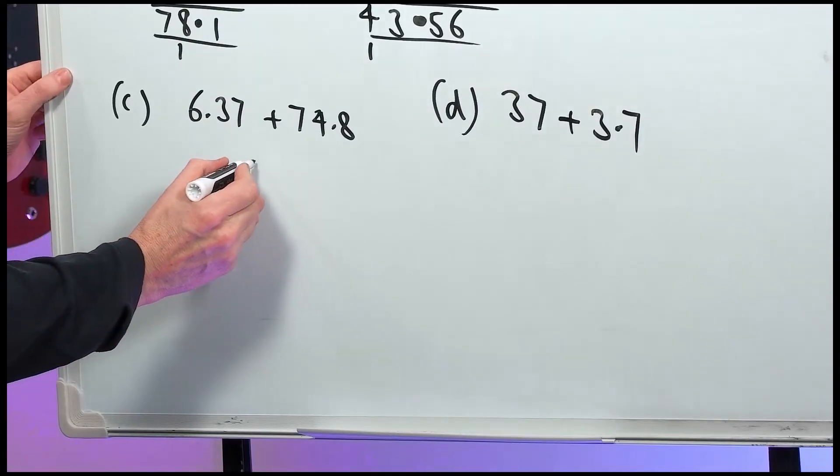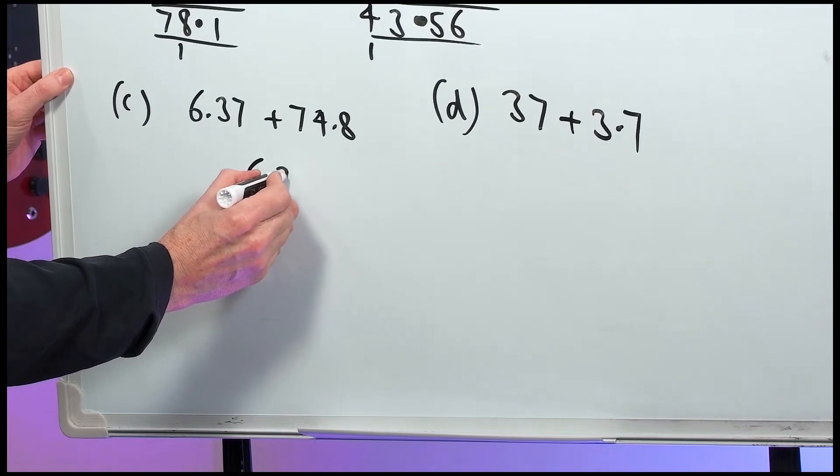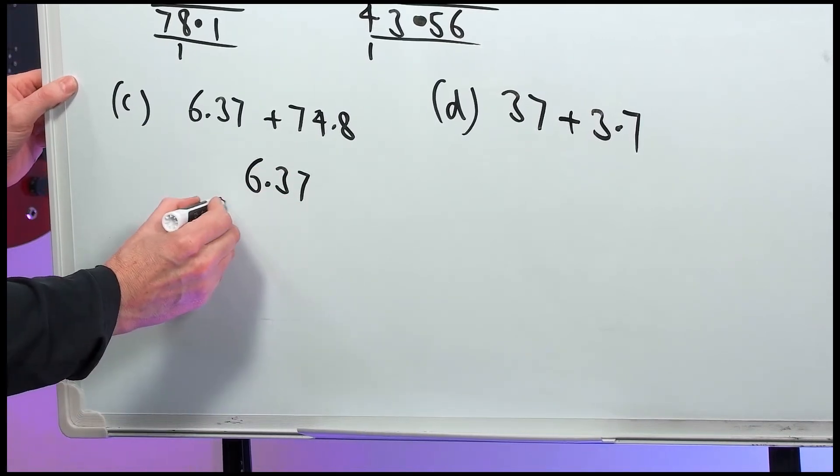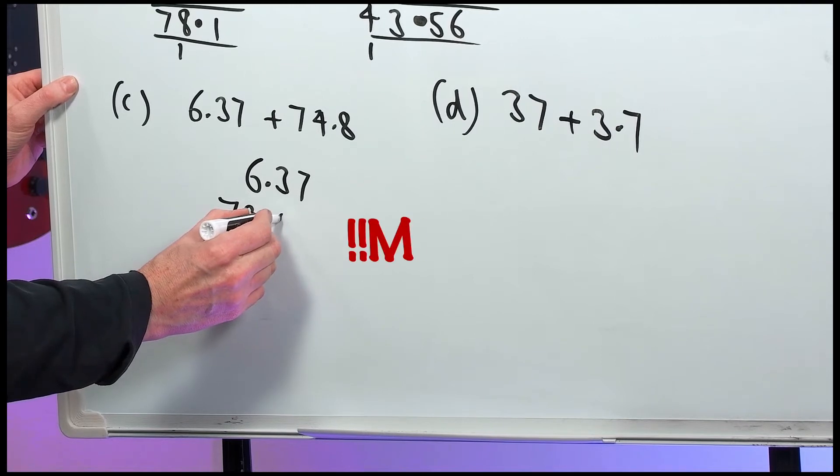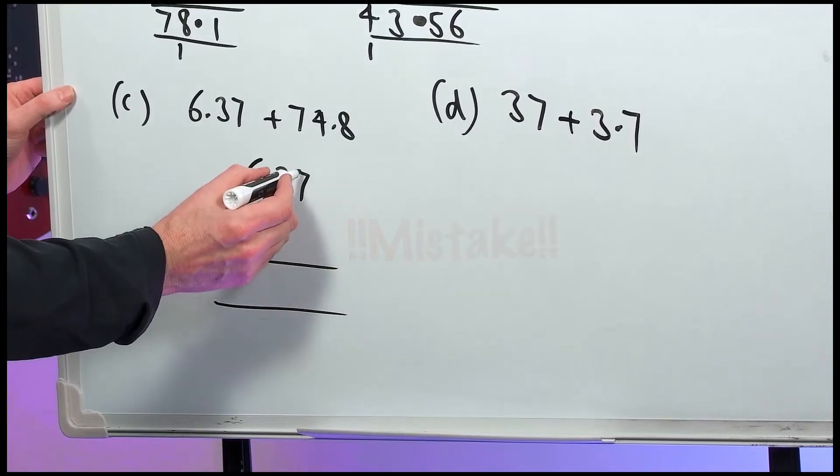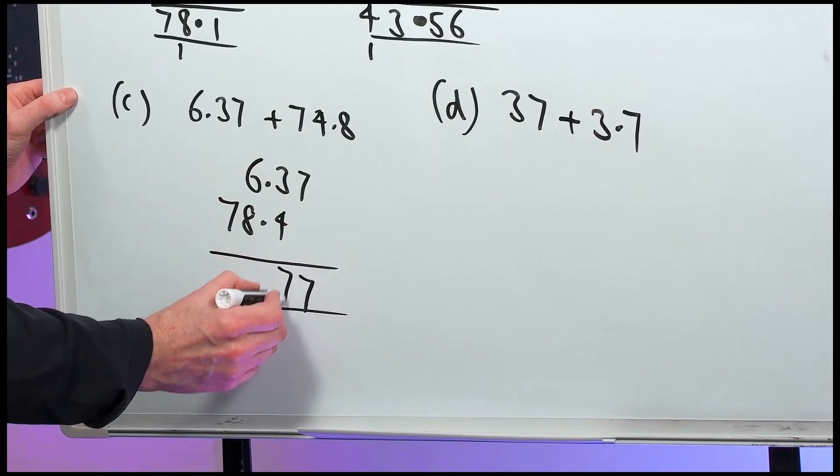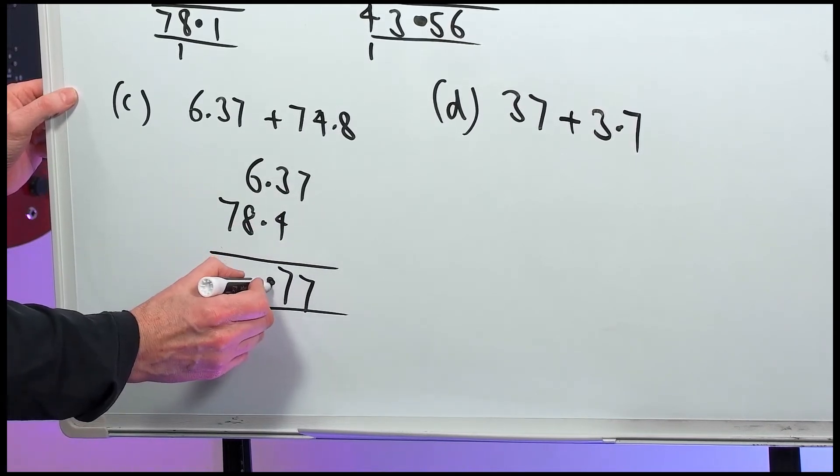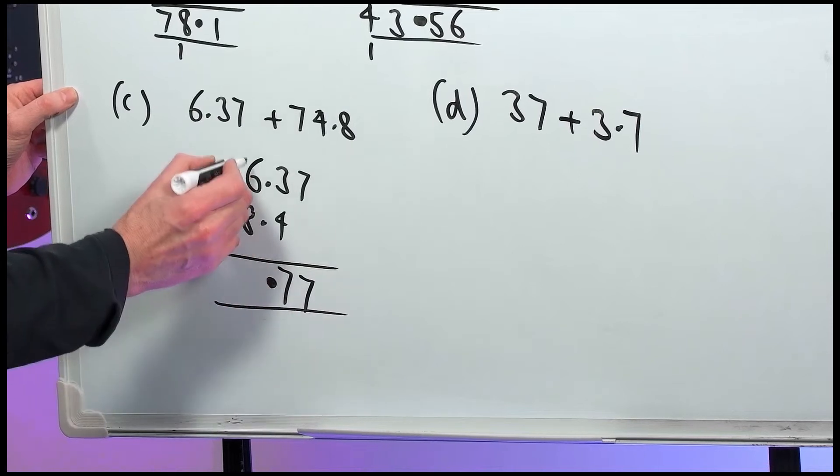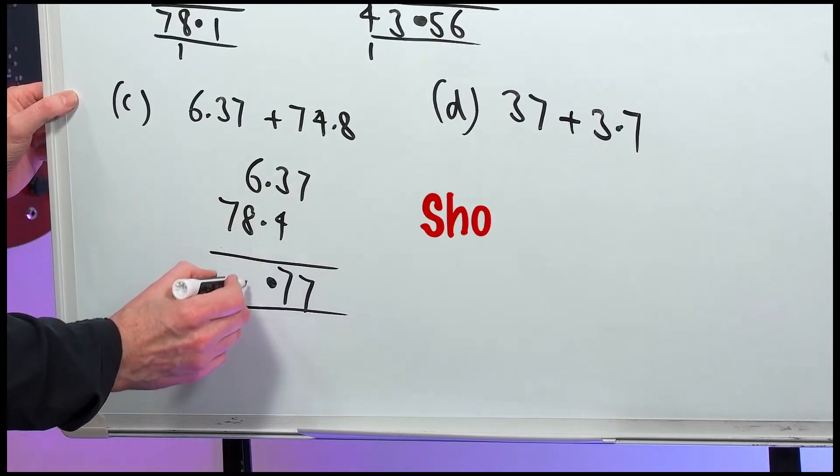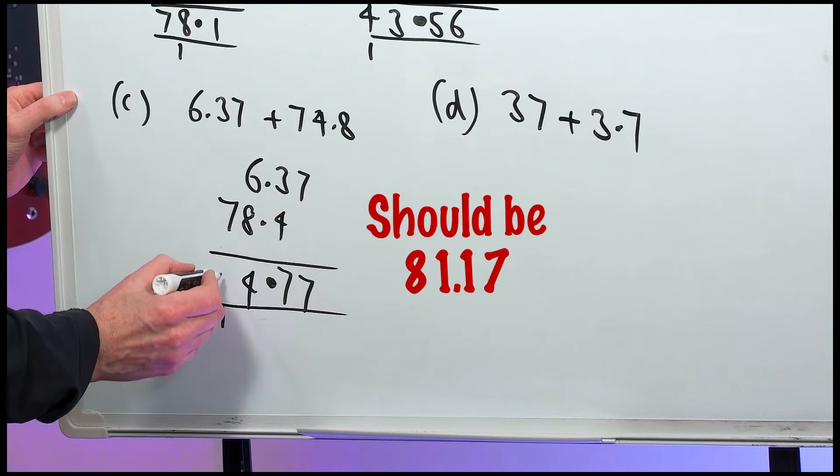Part C. We must line them up in the correct columns. 36.37 plus 78.4. 7 plus nothing is 7. 4 and 3 makes 7. Decimal point lines up. 6 and 8 make 14. And 7 plus the 1 makes 8. 114.77.